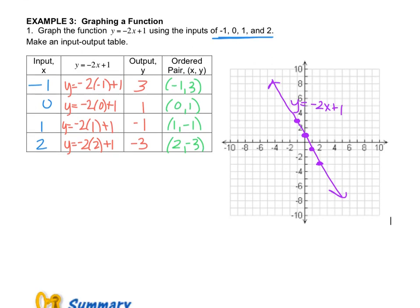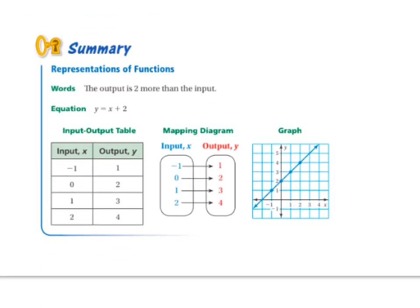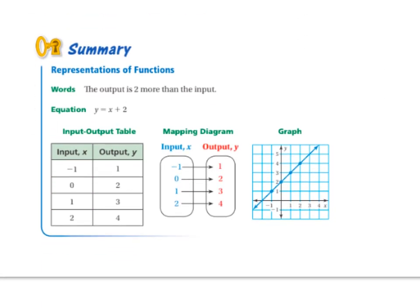So let's wrap this up. Down at the bottom, it tells us you could deal with functions in words, in equations, as an input-output table, as a mapping diagram, or as a graph. These all represent different ways of writing the same thing. Remember, this is very similar to what we did back in Chapter 4. If you have any questions, write them down and ask me when you come to class.